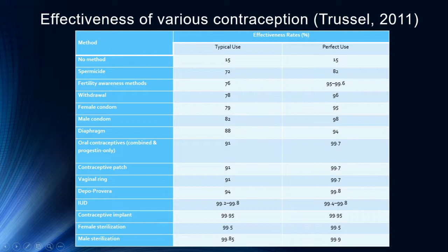Looking at an overall comparison of typical and perfect use effectiveness rates: using no method, about 15% of the time you won't get pregnant, which are not good odds. It's best to focus on the typical use rate because very few people are capable of achieving perfect use. Male condoms at typical use are 82%, perfect use about 98%. Diaphragms have difficulty with incorrect insertion. IUDs and contraceptive implants are among the most effective, along with male and female sterilization.